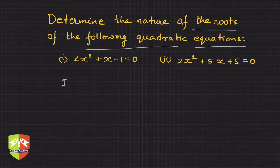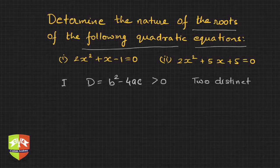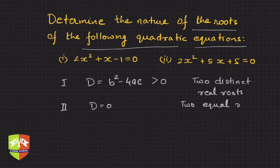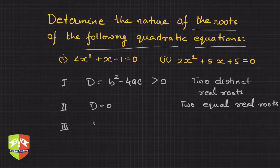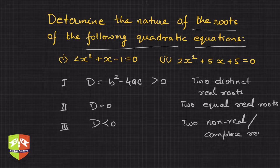We discussed three cases. Case 1: when the discriminant, that is b² - 4ac, is greater than zero, we have two distinct real roots. Case 2: when D is equal to zero, we have two equal real roots — the roots are real but they are the same. Case 3: when D is less than zero, we have two non-real or complex roots.